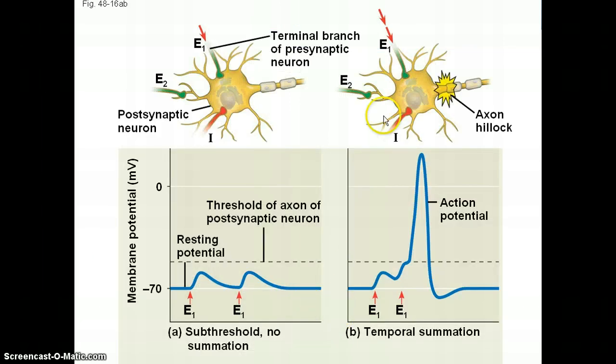Think of it like dominoes: if a person is setting up dominoes and someone blows on them, they may begin to fall, but if they're reset, no big reaction has occurred. However, if someone blows twice in quick succession, that can cause a whole cascade of reactions leading to a full tumbling of all the dominoes. The same thing happens with temporal summation — one excitatory postsynaptic potential hits, opens some sodium channels, but if given enough time, it goes back to resting potential. But if two potentials hit close together in time, you open enough sodium channels and hit threshold, triggering the action potential.